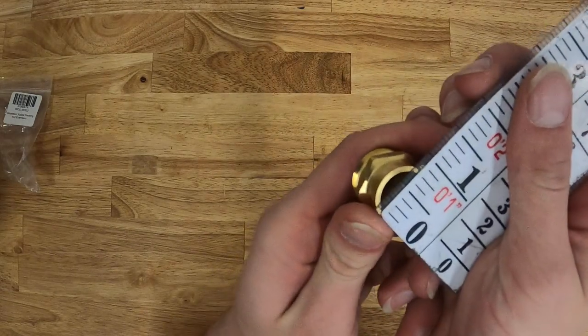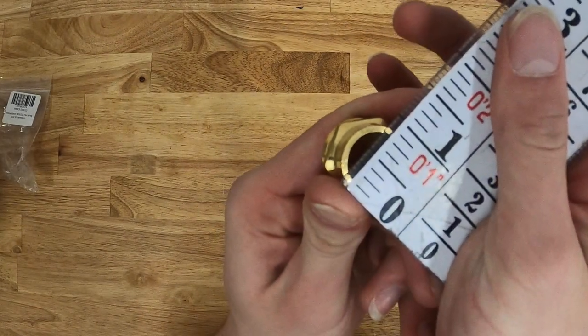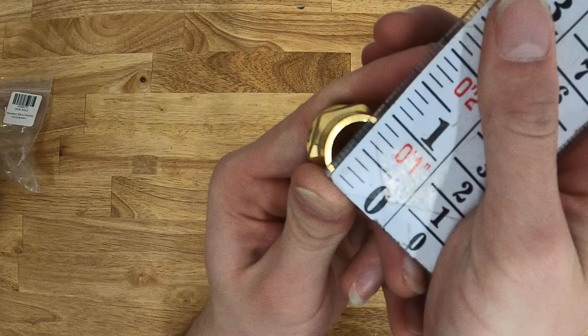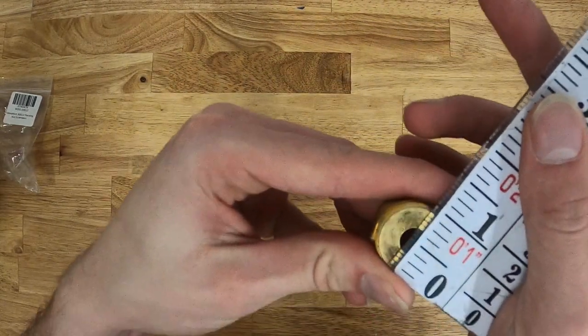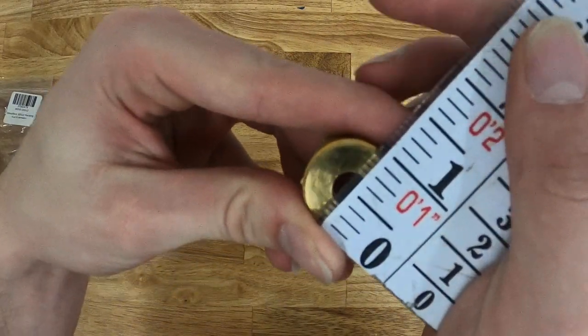Then we can get a diameter of each side as well - that measures right at three-quarters of an inch. And the outside diameter of that side as well, right below an inch.